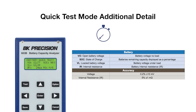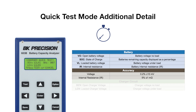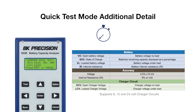Quick Test can be used on both the battery and the charger circuit. Four battery measurement results are displayed in seconds and include open voltage, state of charge, voltage loaded, and internal resistance. Two charger circuit measurements, open and loaded voltage, are displayed when this option is used.